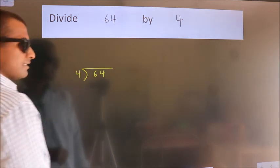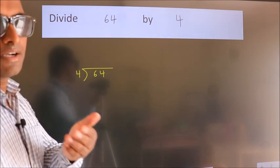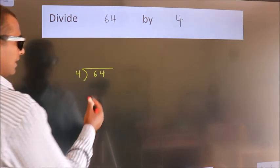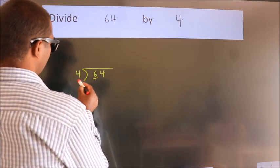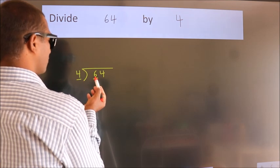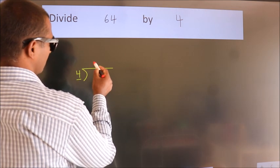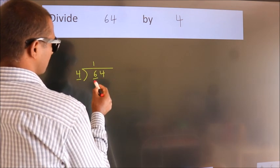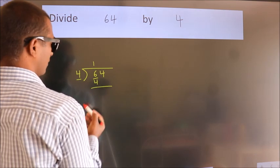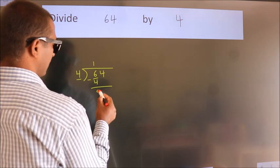This is your step 1. Here we have 6, and here 4. A number close to 6 in the 4 times table is 4 — 4 once is 4. Now we should subtract. We get 2.